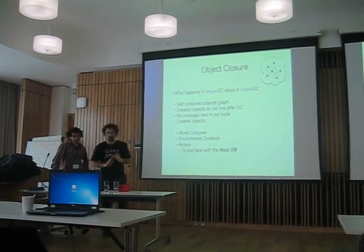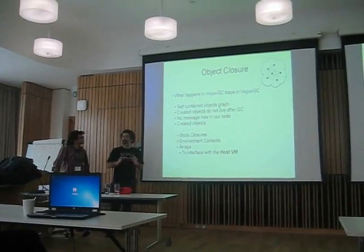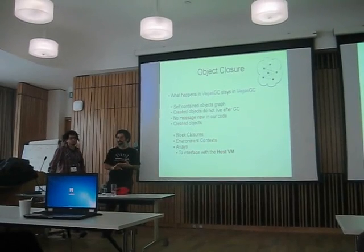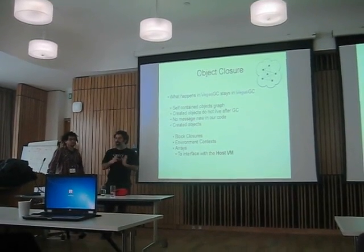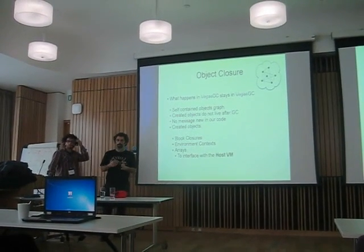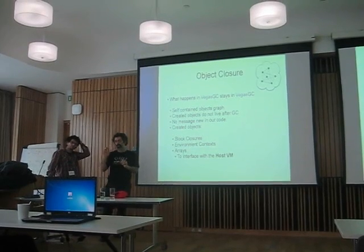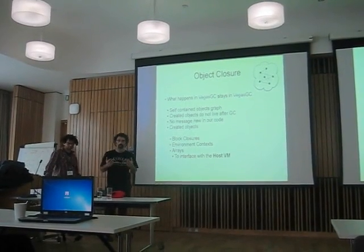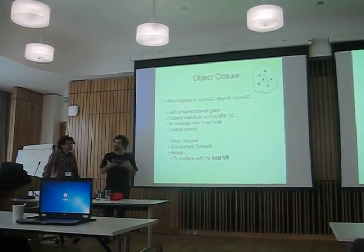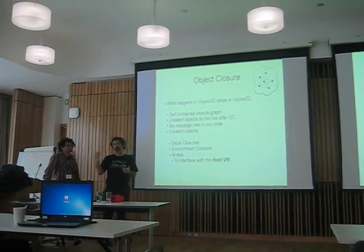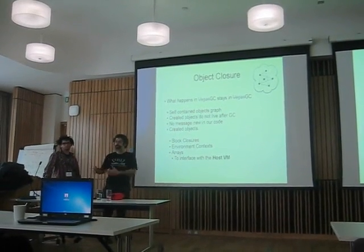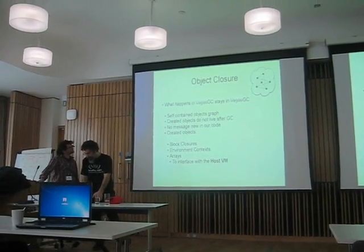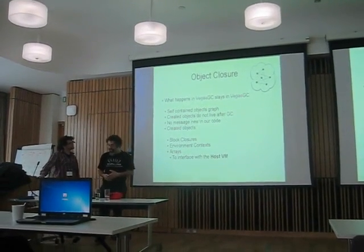The first thing is: everything we create during GC has to go away before finishing GC. So there is nothing that survives GC that was created during GC, except some specific things — like the list of rescued ephemerals. That's a result of the GC that has to survive the GC, obviously, because the image needs to know. So it's a self-contained object graph, and created objects do not live after GC.